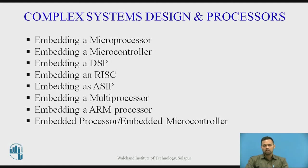DSPs are used for image, audio, video, HDTV, and other processing purposes. RISC processors are considered faster compared to normal processors, with special instruction sets designed for faster processing and computation. For embedding an ASIP — Application Specific Instruction Set Processor — these processors, which include microcontrollers and higher versions, are used for complex system design.